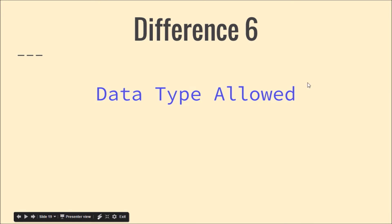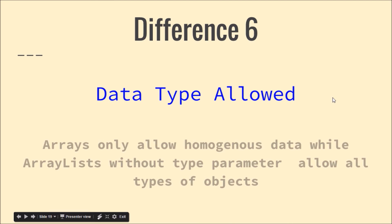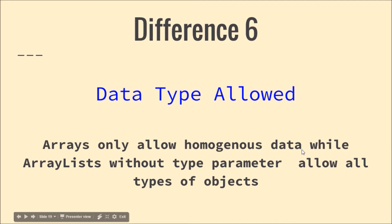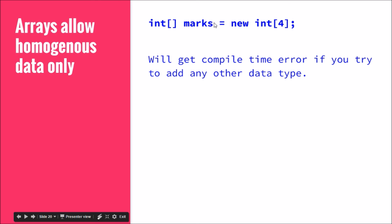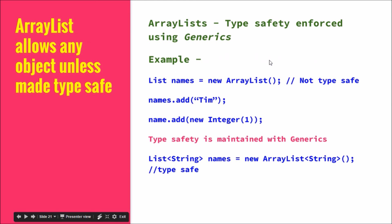The last difference is the data type allowed. Arrays allow only homogeneous data — once you declare an integer array, you cannot store any other data in it. Java will throw a compile error if you try to store any other kind of data. That means you can store only one type of data — this is called homogeneous data.